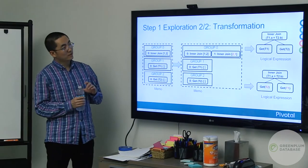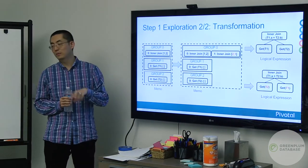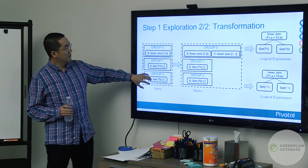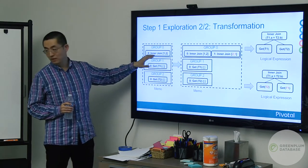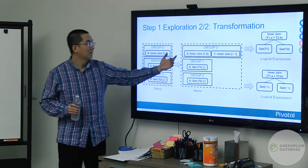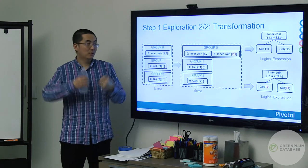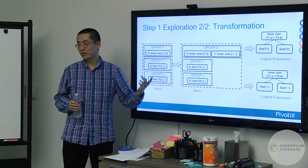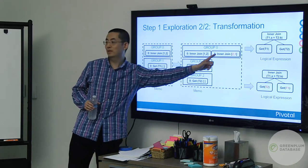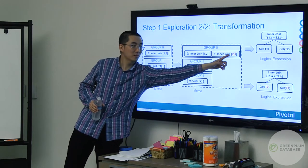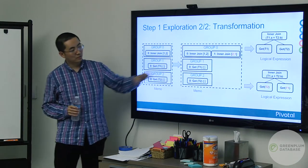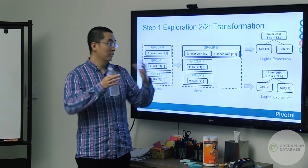Here's an example of a transformation producing semantically equivalent query plans. The original join has T1 on the left, T2 on the right. We apply a commutativity transformation to change the order — the result will be the same. Without memo, you'd create two query plans and make a copy. With memo, we just reuse groups one and two and add one more expression in group zero with the switched order, producing a new plan while being very memory-efficient.